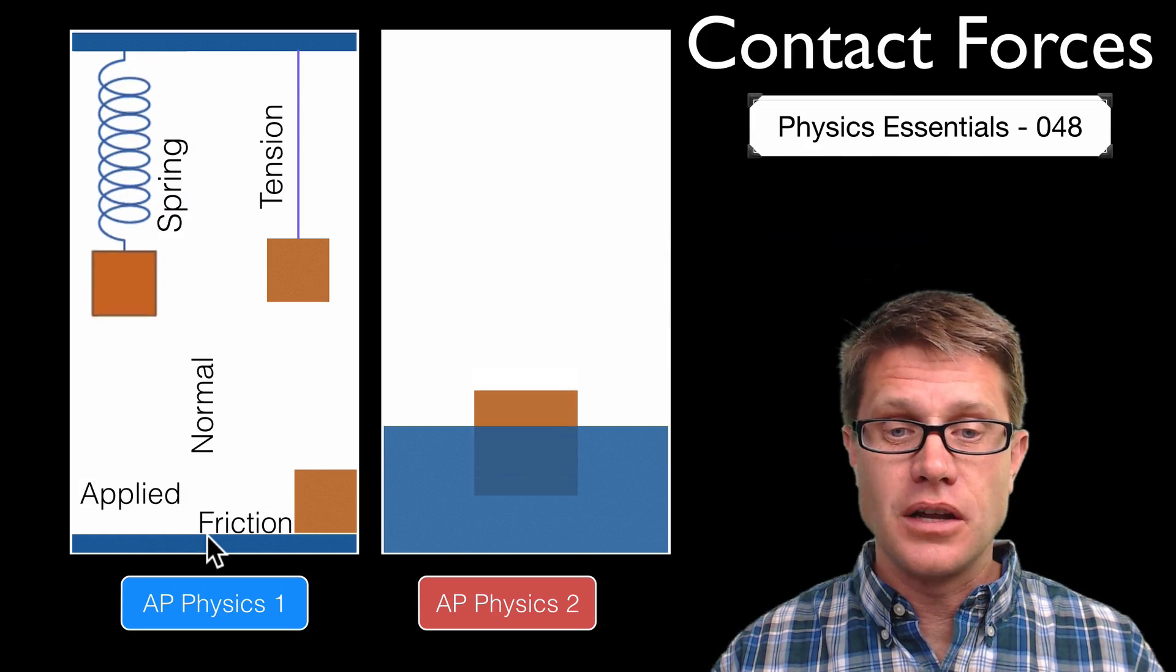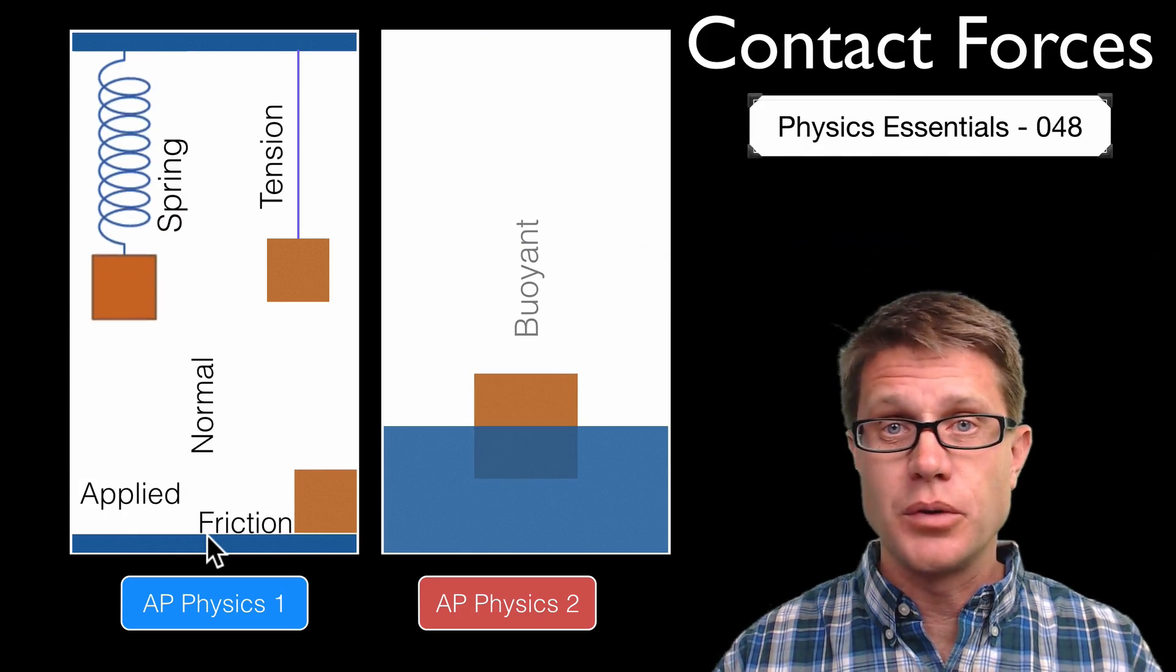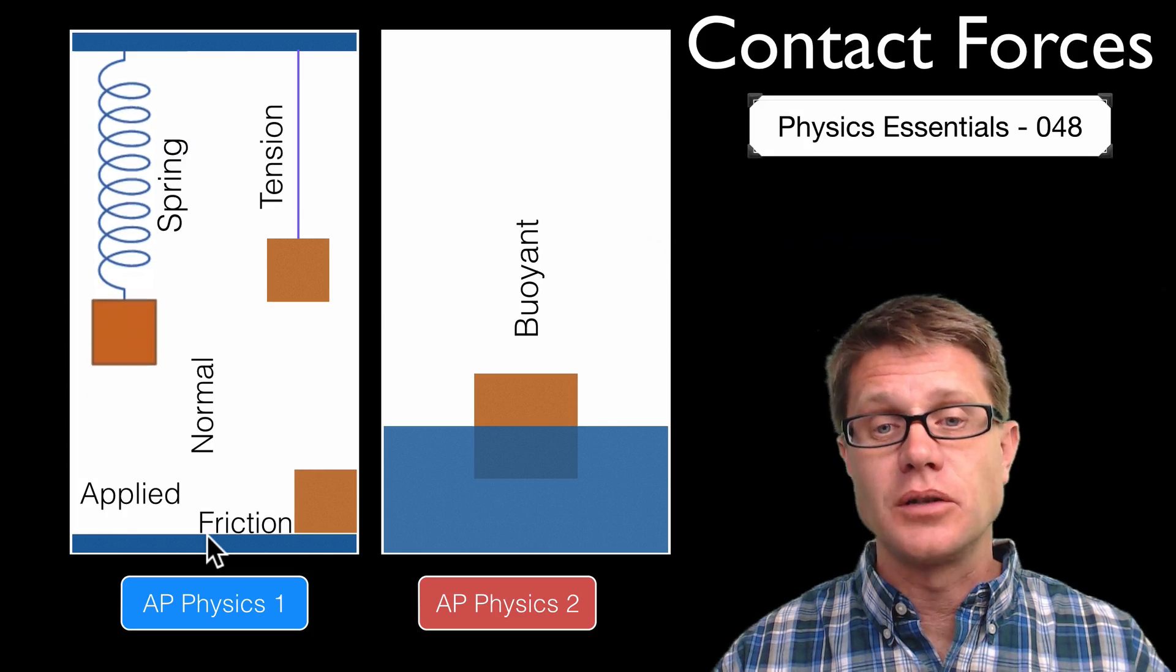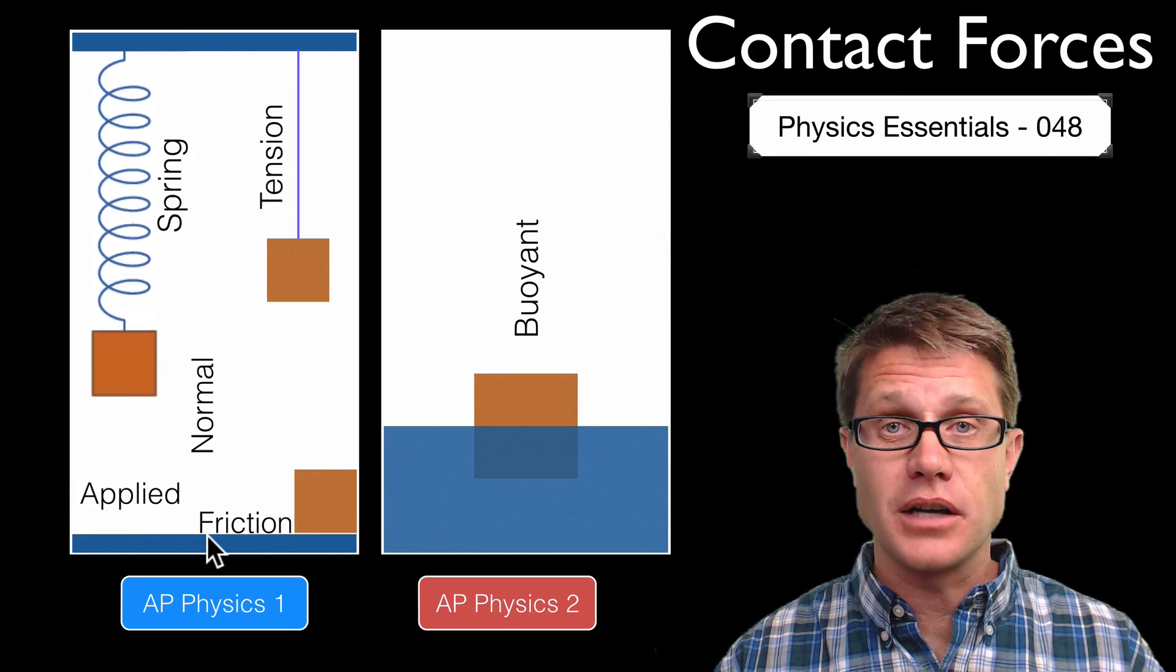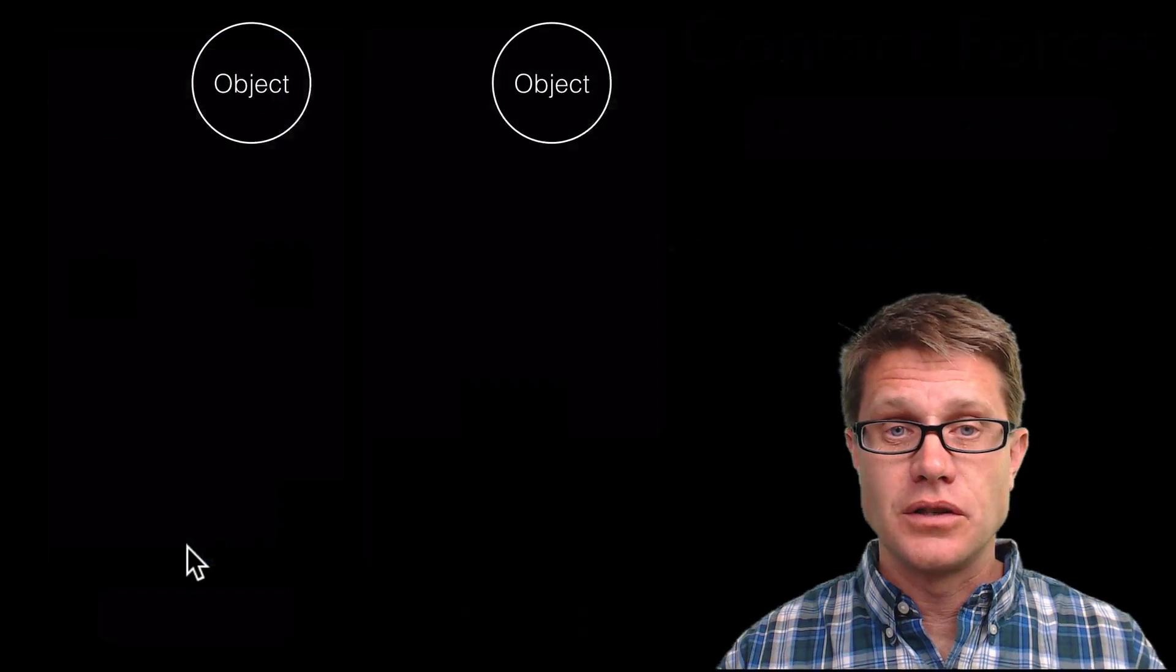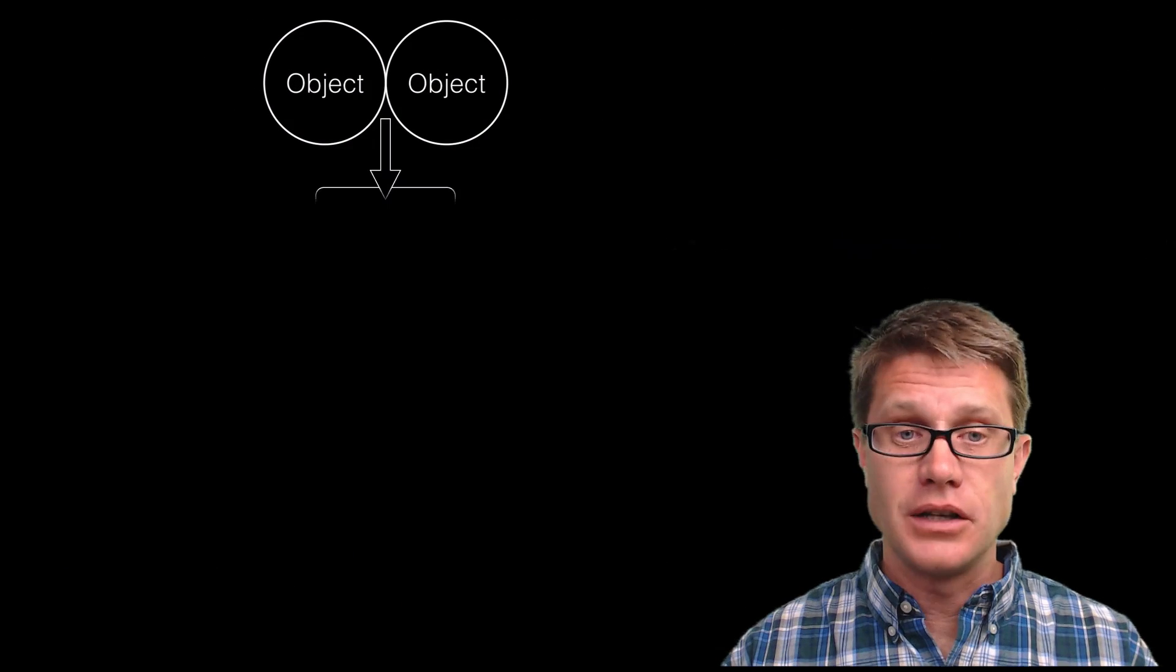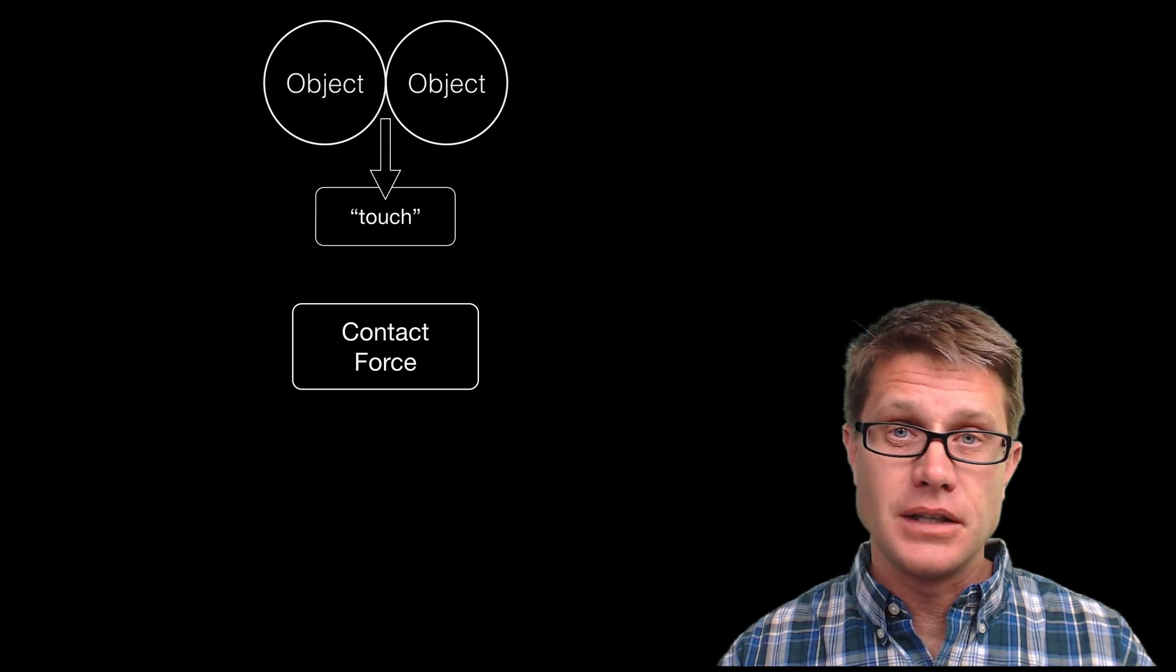And in AP Physics 2 you should understand the importance of a buoyant force. If we put the object inside water there is a buoyant force. In other words the water is actually pushing on that object. But in all of these situations the objects are not really touching. And so if objects quote unquote touch we call that a contact force.